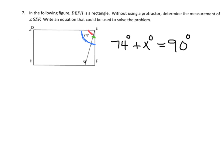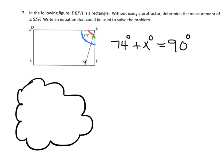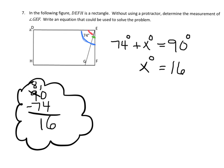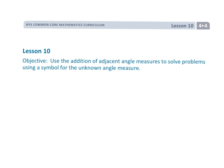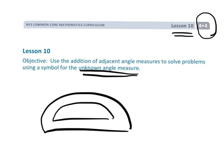So this is saying 74 plus something equals 90. We go to scratch paper and do 90 minus 74, doing some regrouping, which gives us 16. So x degrees is 16 degrees—that little green area. Angle GEF is equal to 16 degrees. And that wraps up Grade 4, Module 4, Lesson 10, where we find the unknown angle not using a protractor but instead using logic.